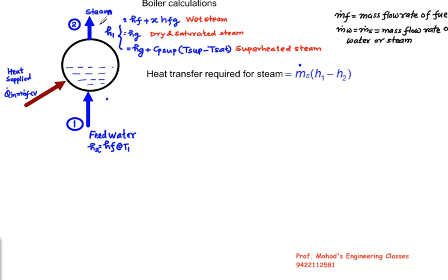To convert the water into steam, we are supplying the fuel at the rate of M dot F. M dot F is called as mass flow rate of fuel, and CV is called as calorific value.